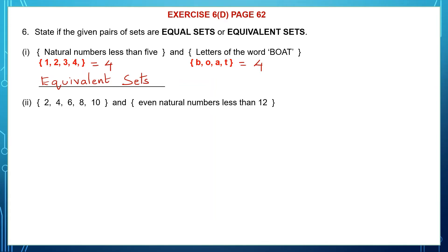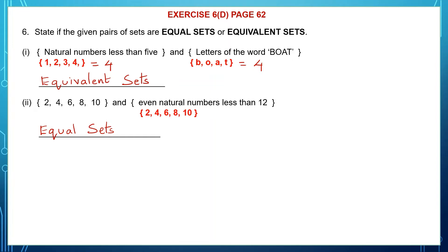Second question: the first set is {2, 4, 6, 8, 10} and the second set is even natural numbers less than 12. Even natural numbers less than 12 are 2, 4, 6, 8 and 10. Now look at the first set and the second set — the elements are the same, so such sets are called equal sets. If you also count the number of elements, both have 5 elements, so they can also be called equivalent sets.